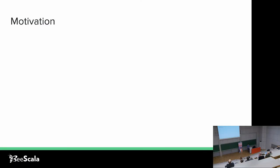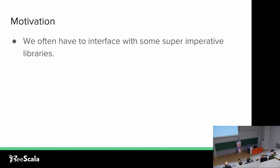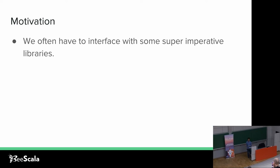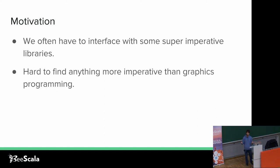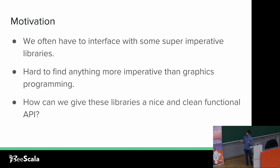Let's start with the motivation for this talk. Oftentimes as functional programmers we want to interface with some super imperative libraries. As functional programmers we want to avoid all kinds of side effects, and this works pretty well if we're in our own environment and never have to leave — for example the Scala world — but oftentimes we have to interact with a Java library, or worse a C library, and in this case a graphics library, which is like the most imperative it can get. So how can we give these libraries a really nice and clean functional API? This is the main question of this talk.